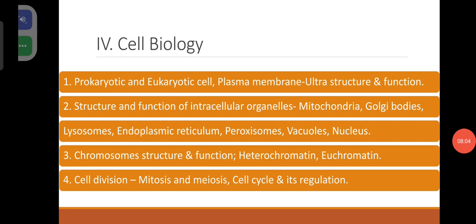Coming to cell biology: prokaryotic and eukaryotic cell. Plasma membrane — ultrastructure and function. Structure and function of intracellular organelles like mitochondria, Golgi bodies, lysosomes, endoplasmic reticulum, peroxisomes, vacuoles, nucleus, etc.